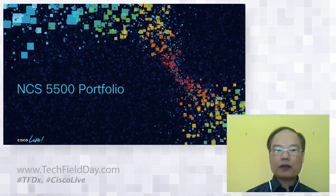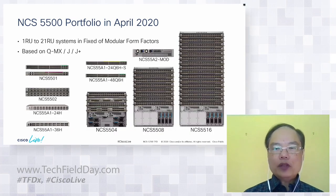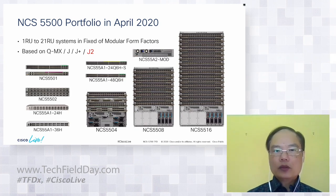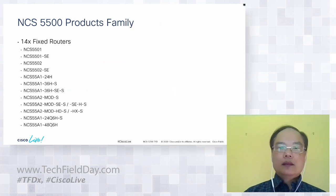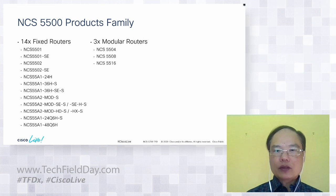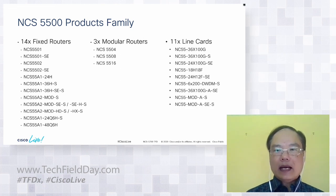Let's do a brief recap of the NCS 5500. It was introduced more than four years ago and has a broad range of fixed and modular chassis form factors based on the Broadcom DNX family of NPU — from Qumran MX, Jericho, Jericho Plus, to the Jericho 2, which we'll be introducing today. This family now has 14 fixed chassis from 1RU to 2RU, and 3 modular chassis with 4, 8, and 16 slots, and 11 line cards today — 9 based on Jericho and Jericho Plus, and two introduced today based on Jericho 2.